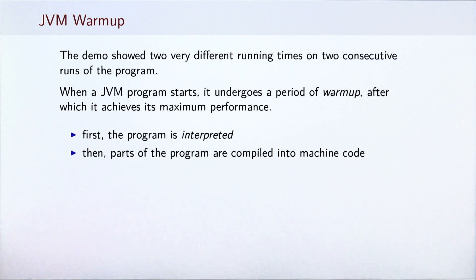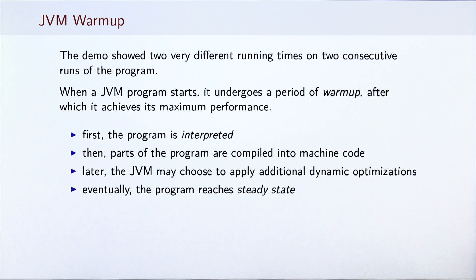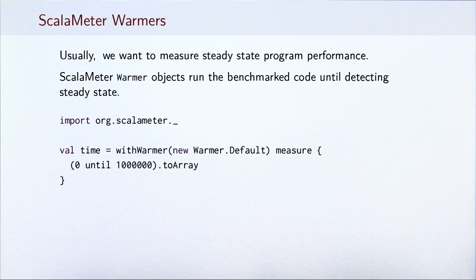JVM is smart enough to figure out which parts of the program are the hot parts, those that are executed the most often. And exactly those parts are compiled. However, it turns out that later the JVM may choose to apply additional dynamic optimization. For program segments which run really often, it makes sense to apply further analysis and optimizations to ensure that they are as fast as possible. And eventually, the program hopefully reaches some steady state. Usually we want to measure steady state program performance.